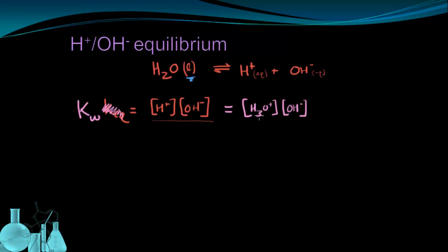So at 25 degrees Celsius, the value of KW is 1 times 10 to the negative 14th. So that means that the concentration of H+ and OH- always have to multiply together to become this number. And we call this the ion product constant.